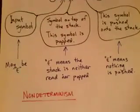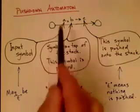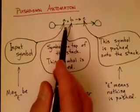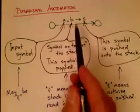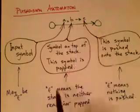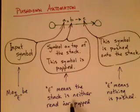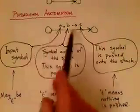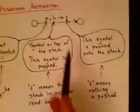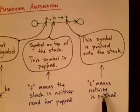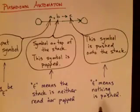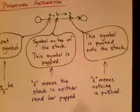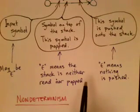Now, these can be empty. So the first symbol can be epsilon, in which case nothing in the input is scanned. The second symbol can be epsilon, which means the stack is neither read nor popped — so the transition can be taken regardless of what's on top of the stack. And in the last position, epsilon means we do not push anything onto the stack when the transition is taken. Notice with all these epsilons, we have non-determinism, so the machine is non-deterministic in general.